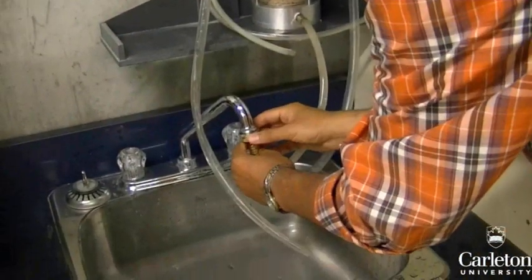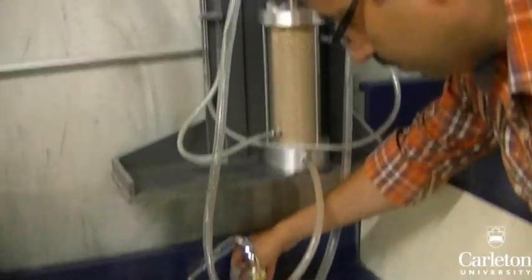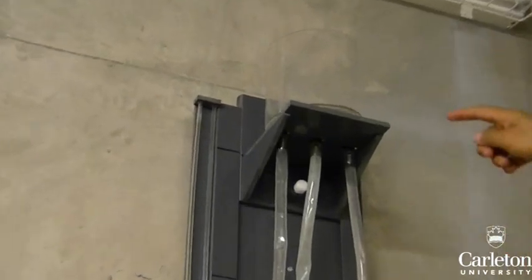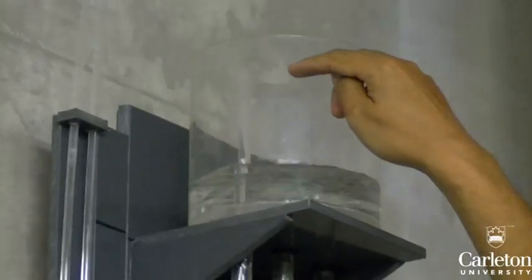Turn on the tap and let the reservoir fill up. Once the level of water in the reservoir reaches a certain level, it will start to discharge into the sink. When this happens, the level of water is constant, and we can begin the test.